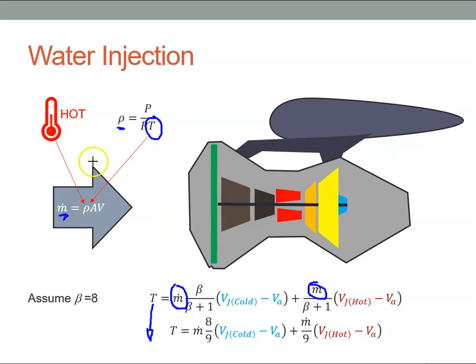On really warm days this can be an issue. Now we saw on previous videos that the engines are generally flat rated, so the engine manufacturer guarantees a certain amount of thrust up to a particular temperature, let's say 30 degrees.